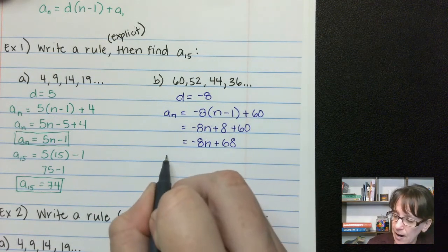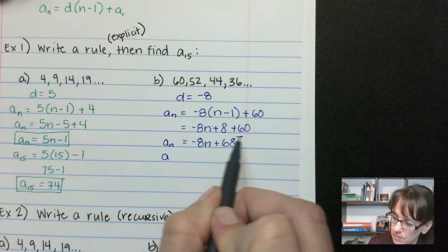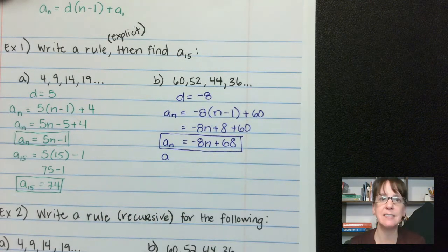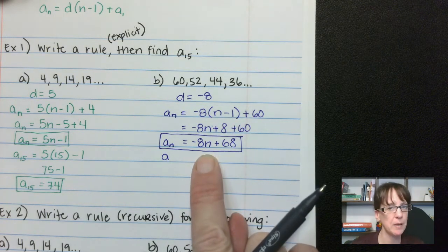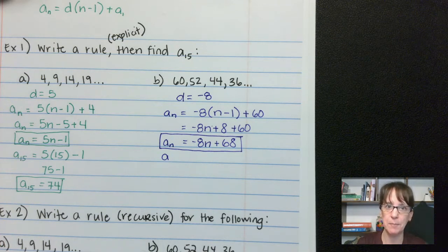Okay. With that said, we say, all right, now what is—let me block that off. There's our rule. Okay. So for anything in this sequence, I can just find the position number, multiply it by negative 8, and then add 68 to it. And that will give me what's in that position number.